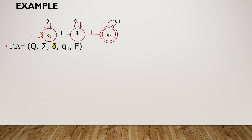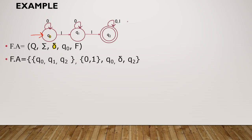In this figure, Q0 is the initial state. F is the final state, and the final state is Q2, so F equals Q2. The set of states Q contains Q0, Q1, Q2. Sigma contains 0 and 1 as the input alphabet. The initial state Q0 is shown with an arrow, and the final state Q2 is shown with a double circle.